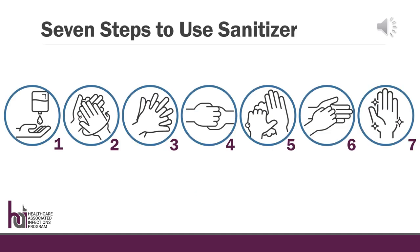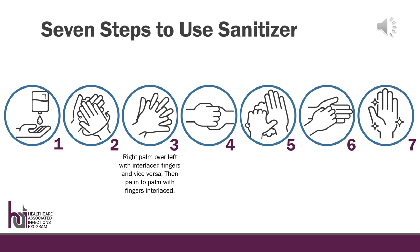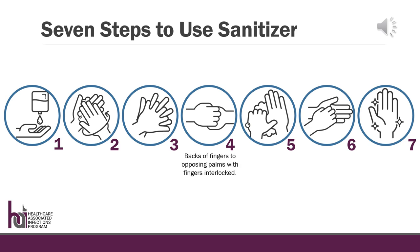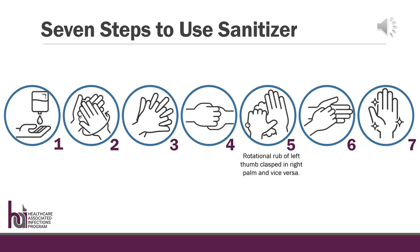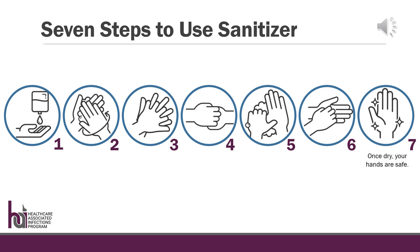There is a process for using hand sanitizer. These seven steps will help make sure you cover all areas of your hands. First, apply a palmful of the product in a cupped hand. Rub hands palm to palm. Right palm over left with interlaced fingers and vice versa, then palm to palm with fingers interlaced. Backs of fingers to opposing palms with fingers interlocked. Rotationally rub the left thumb clasped in the right palm and vice versa. Rotationally rub backwards and forwards with clasped fingers of right hand and left palm and vice versa. Once dry, your hands are safe.